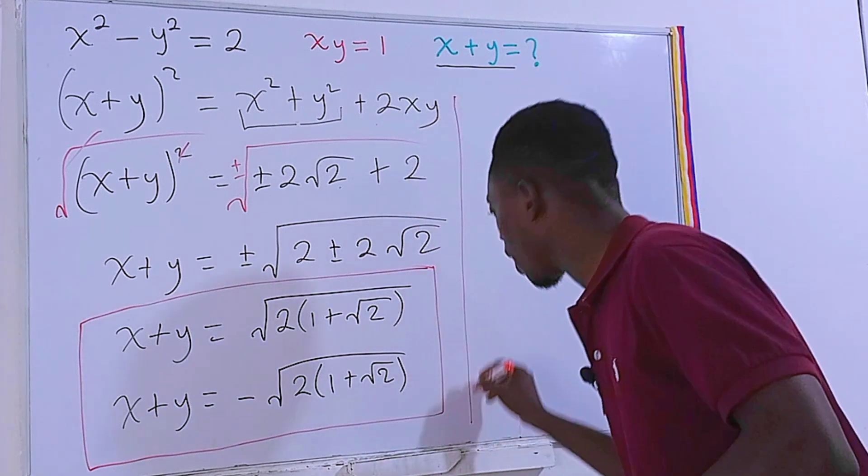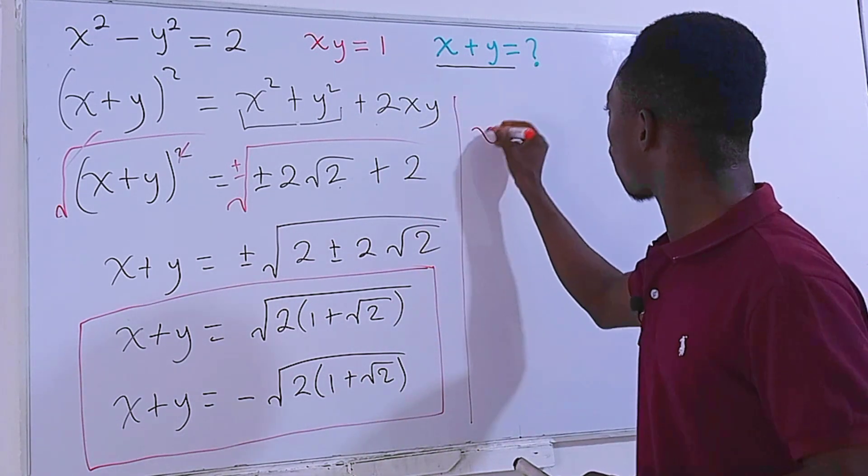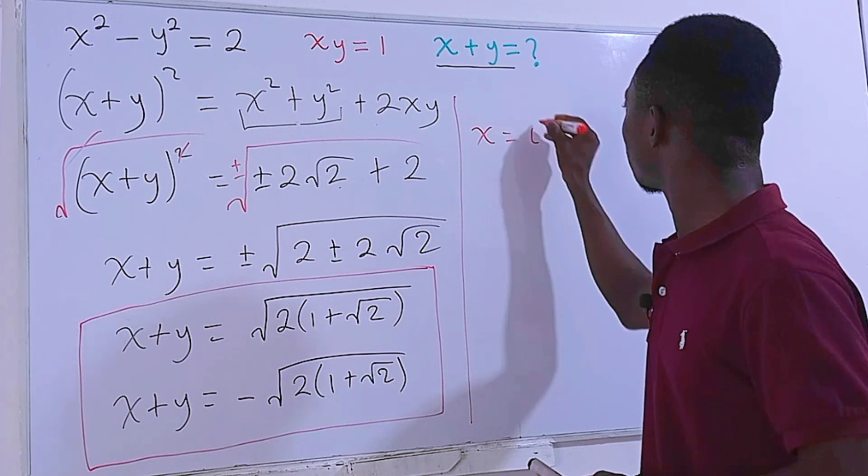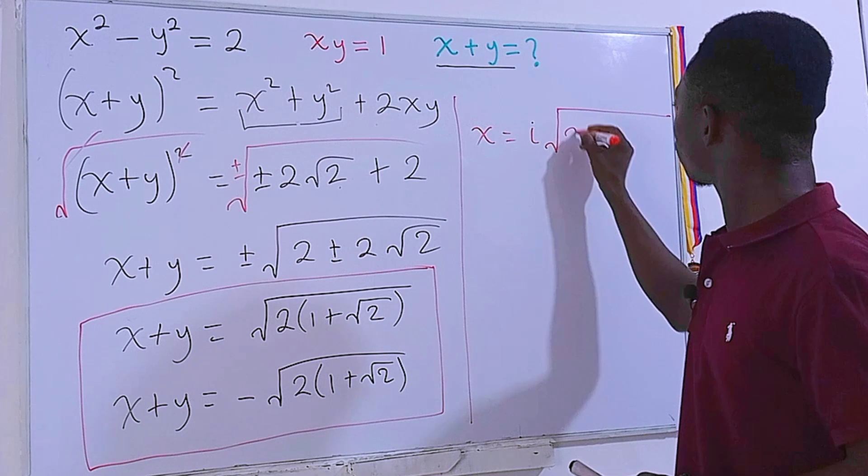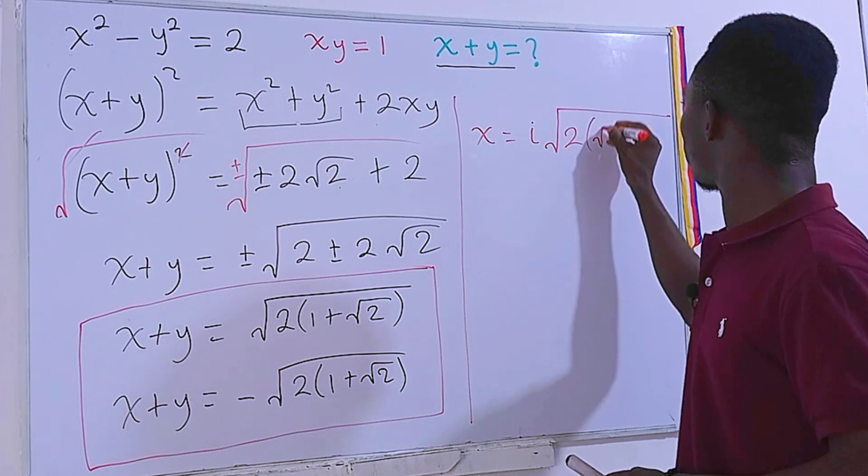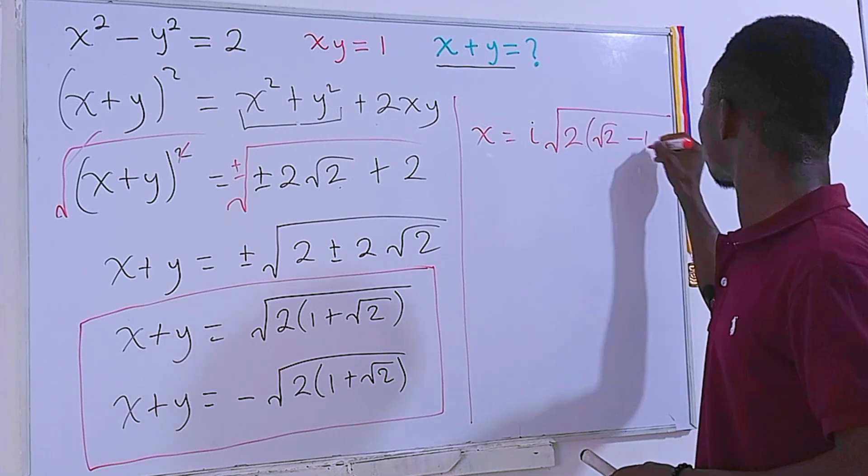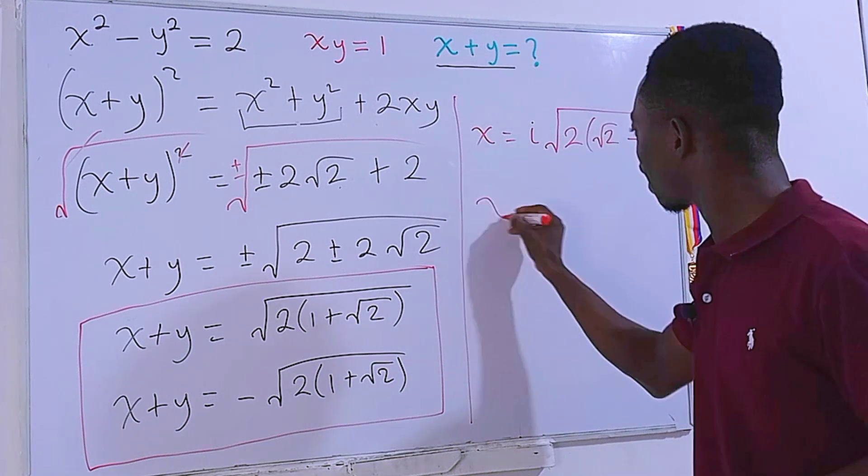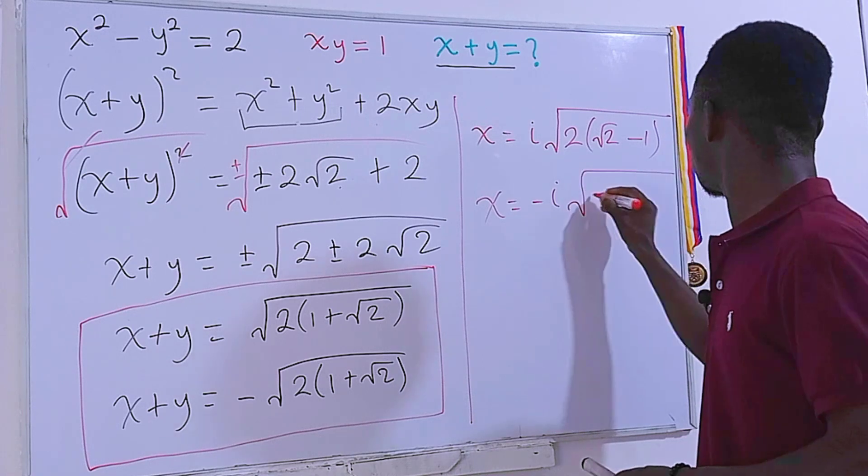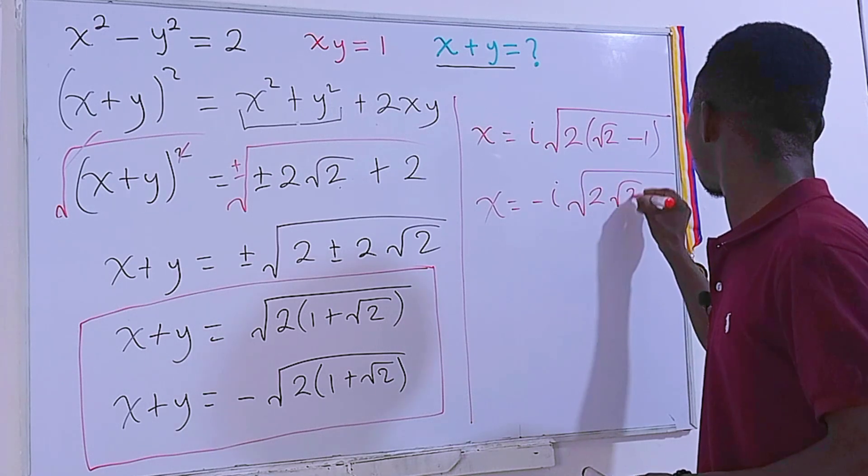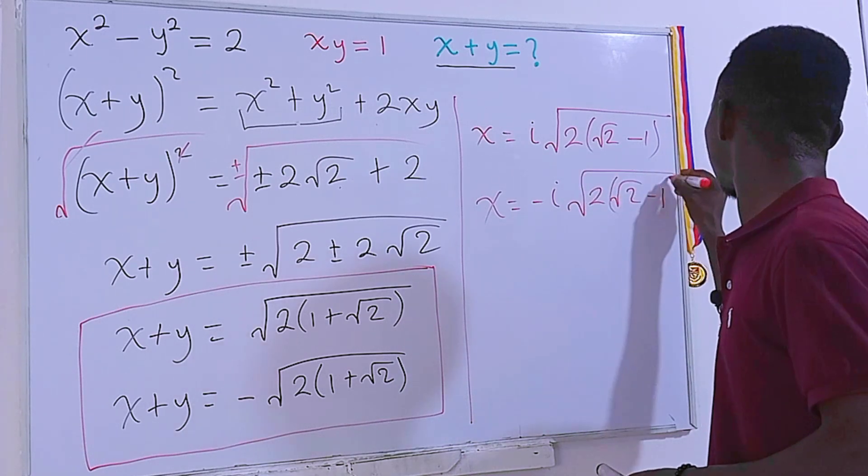Now, let's look at the complex solutions. For the complex solutions, we'll have x plus y is equal to i square root of 2 times square root of 2 minus 1. Then, the second complex solution is minus i square root of 2 times square root of 2 minus 1.